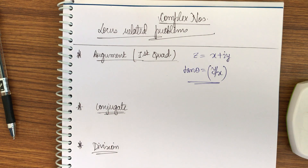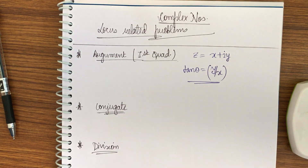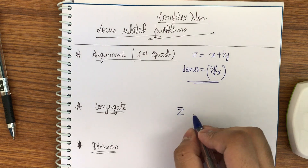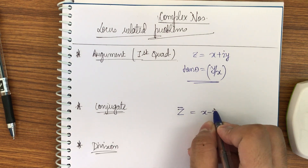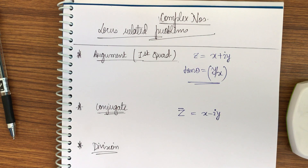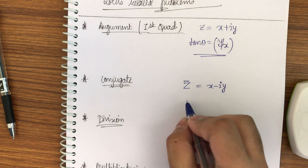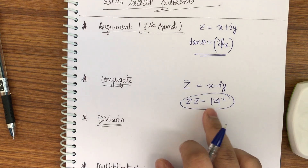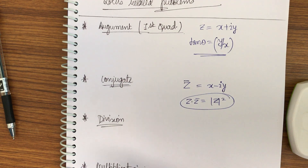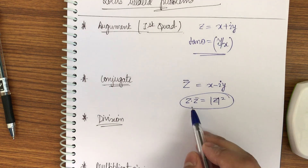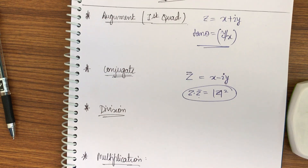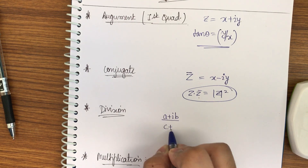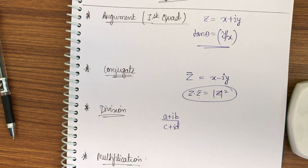Now, conjugate: if z = x + iy, then the conjugate is represented by z̄, and z̄ = x - iy. It is simple to derive that z · z̄ = |z|². You should be comfortable with this as it is one of the easiest topics. So z · z̄ = |z|². Now, division of complex numbers: if I have (a + ib)/(c + id), let me tell you how to solve it.